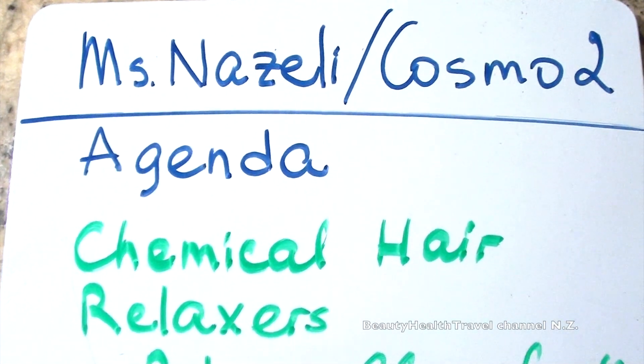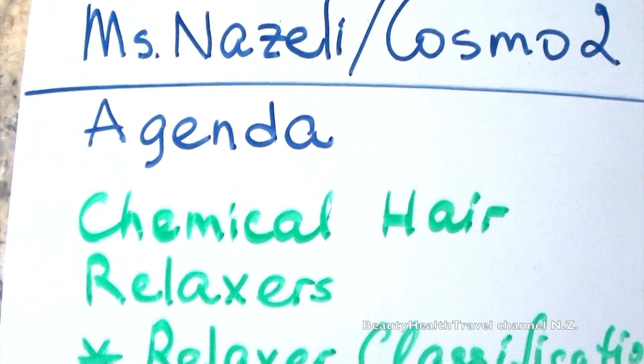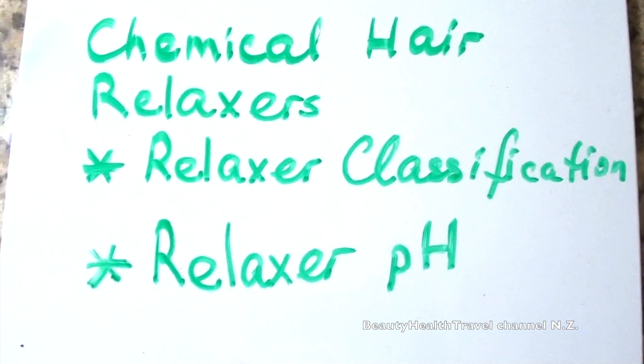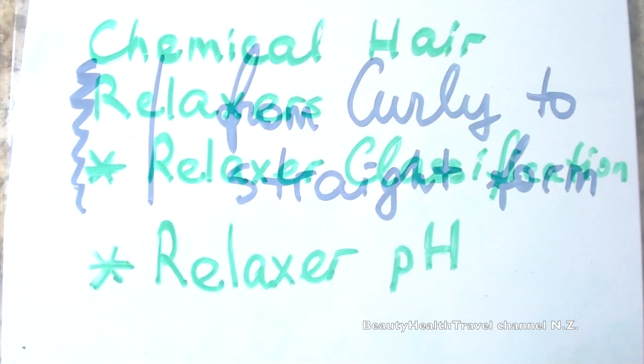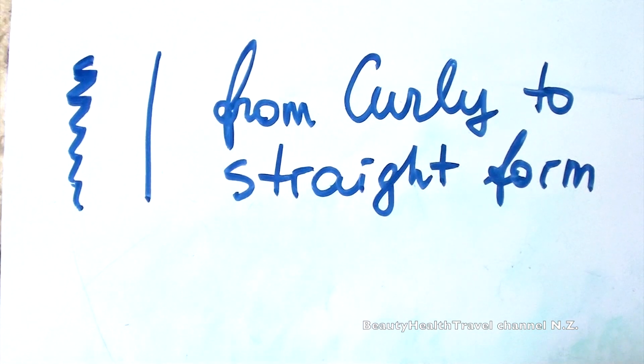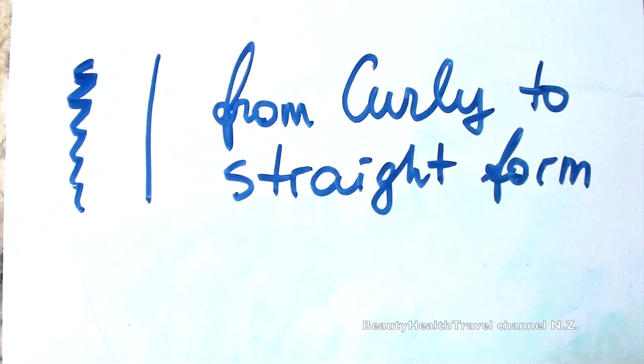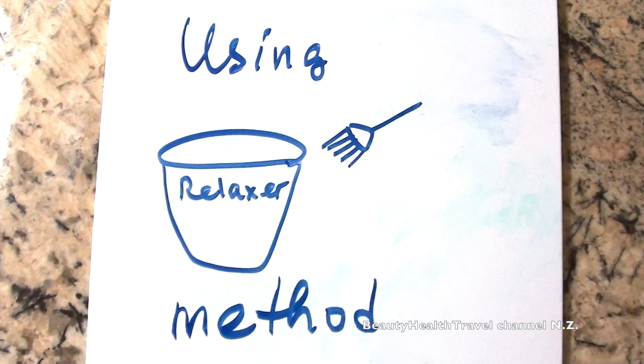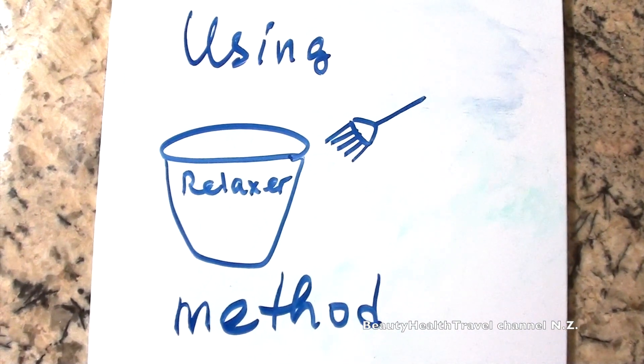Students, today's class agenda is chemical hair relaxers, relaxer classification, and relaxer pH. Chemical relaxer is permanently making the hair from curly to straight form using a bowl and brush method.